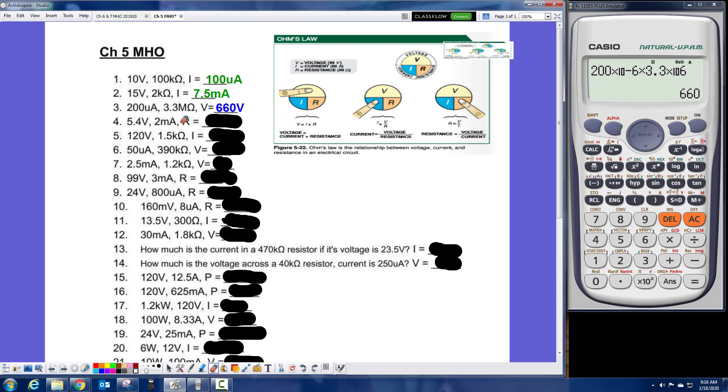Alright, and number four, I'm looking for resistance. So if I cover up the R, it's V divided by I. And the V is 5.4 volts over the I of 2 milliamps. And this gives me my resistance of 2.7K ohms. And remember that all of your answers have to be between 1 and 1,000. So whatever the appropriate metric prefix is to put them in between 1 and 1,000, that's the way you have to answer it.